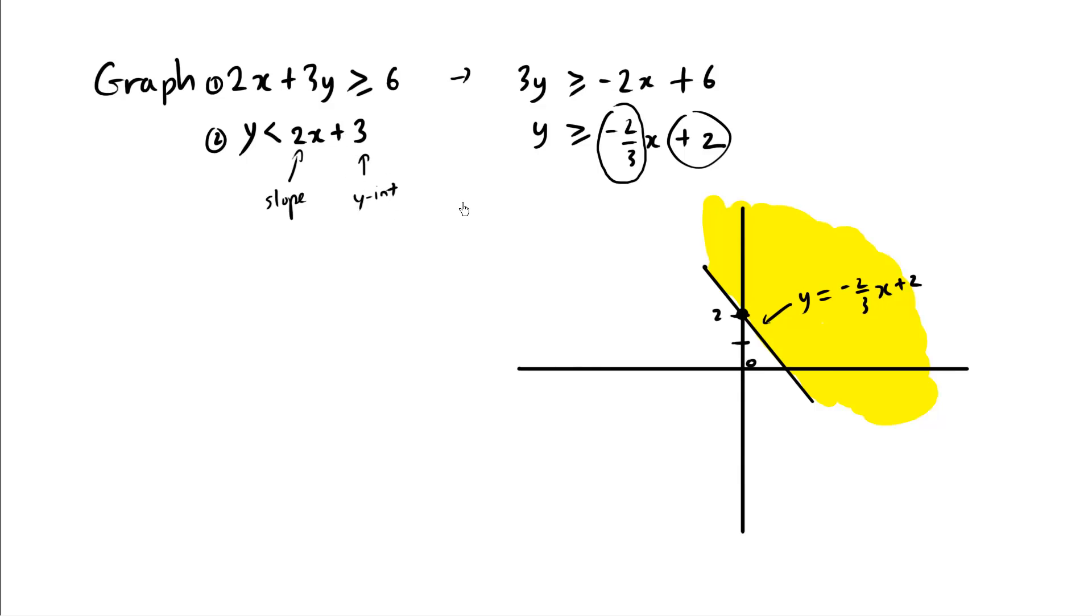A y-intercept of positive 3 means it's definitely going to cross over here, where the y value is 3. And a slope of 2 means it's going to be steep. Left to right, it's going uphill. Slope of 1 is about 45 degrees. A slope of 2 is a little more steep. Let me try guessing around here. Let me try that again, around here.